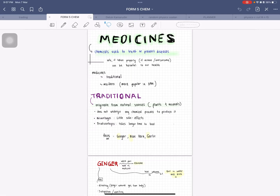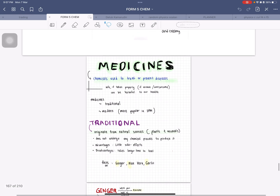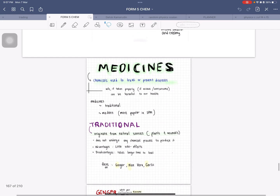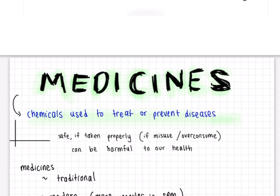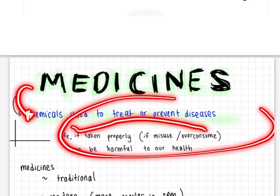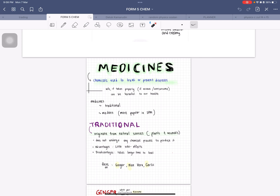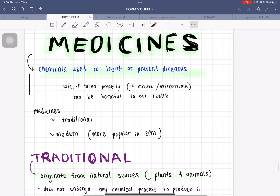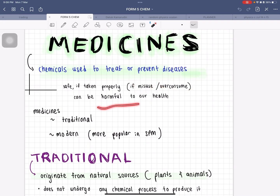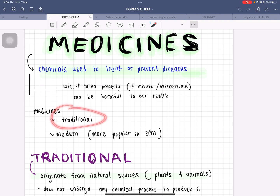Welcome back, everyone. We are going to finally cover the last subtopic inside this chapter. By definition, medicine is chemicals — chemicals that are used to treat or prevent diseases. Normally medicines are safe if taken properly, but if you misuse or over-consume them, they will become harmful towards our health. We have two kinds of medicines in our syllabus: traditional and modern.